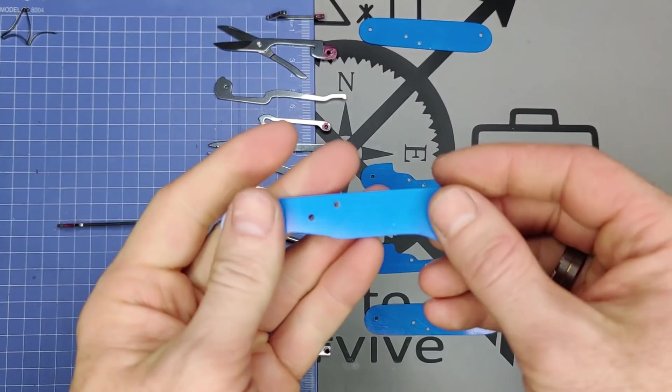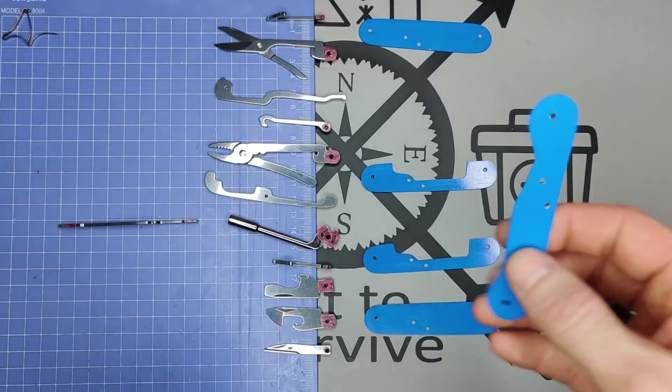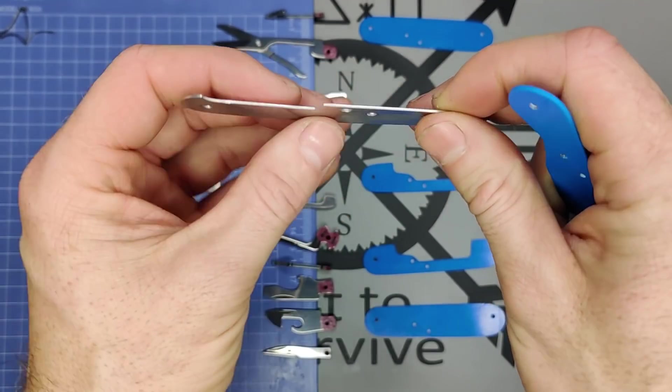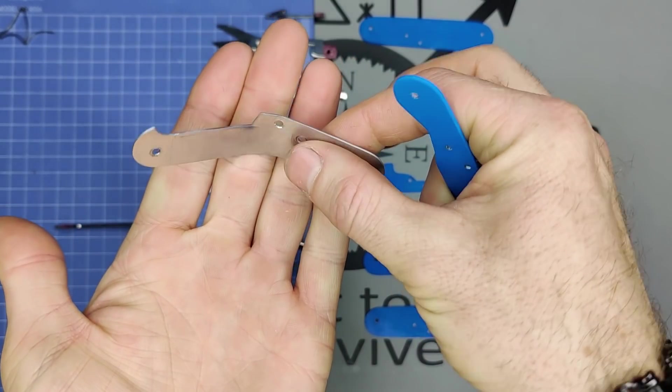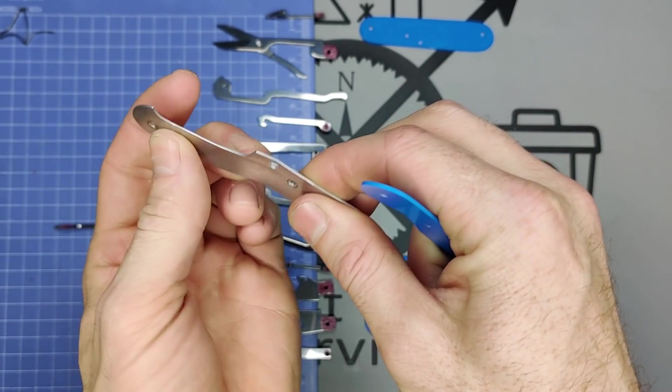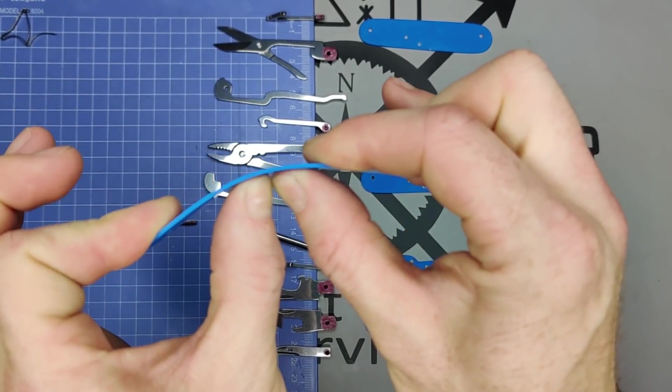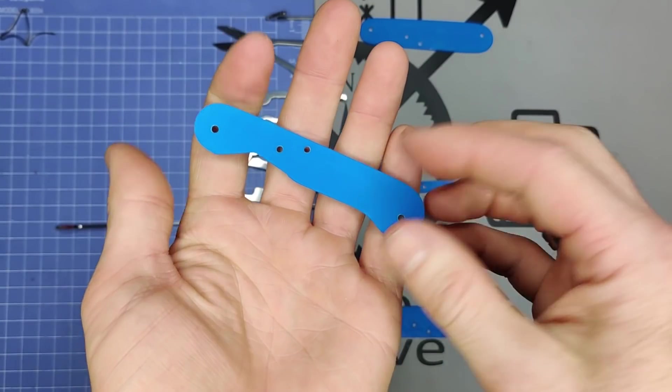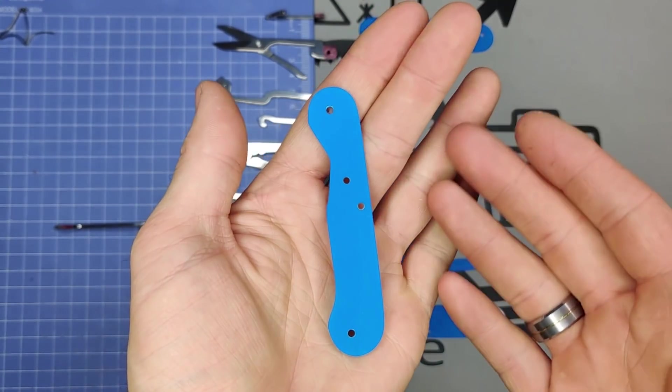But other than that, also an advantage that the G10 has over the aluminum is that whenever you bend the original aluminum liners, they stay bent. They don't come back. Whereas the G10, you bend it, it returns back. So otherwise, weight-wise, endurance-wise, they both hold about the same.